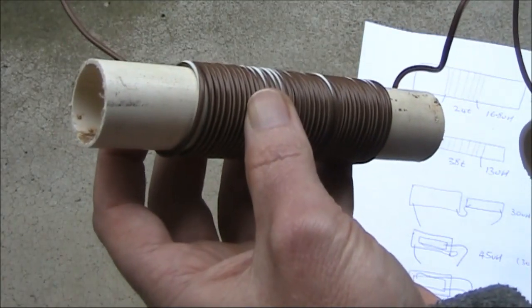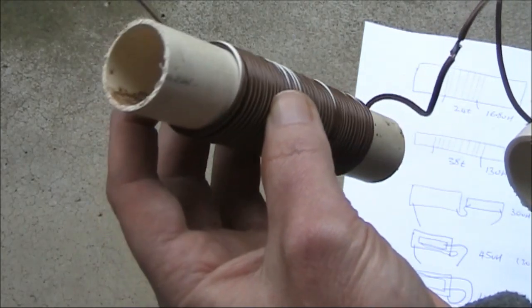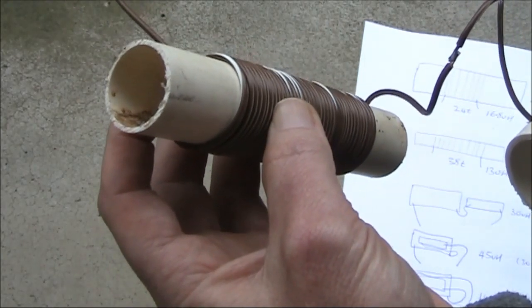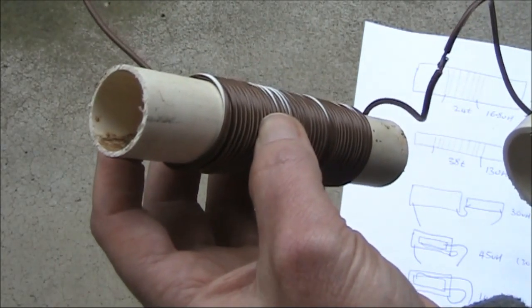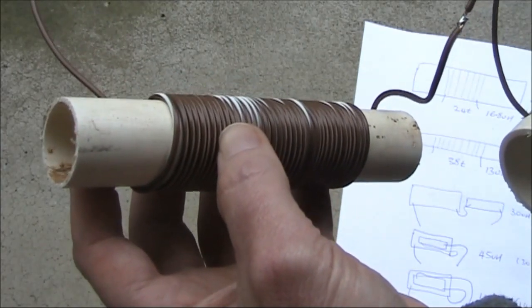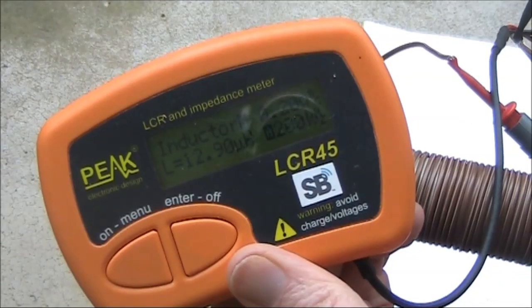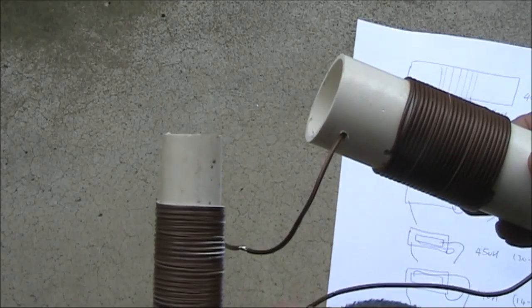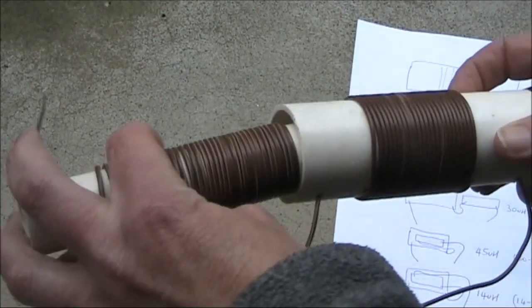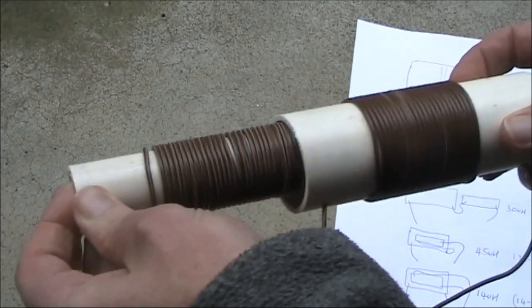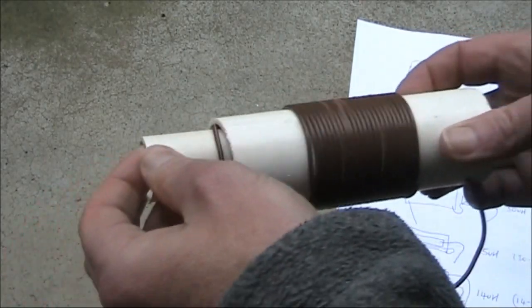The second inductor has 38 turns, but is on thinner 25 millimeter pipe. Its total inductance is 13 microhenries. The reason for the thinner pipe is so that you can slide it inside the thicker pipe. That will allow you to vary the inductance.